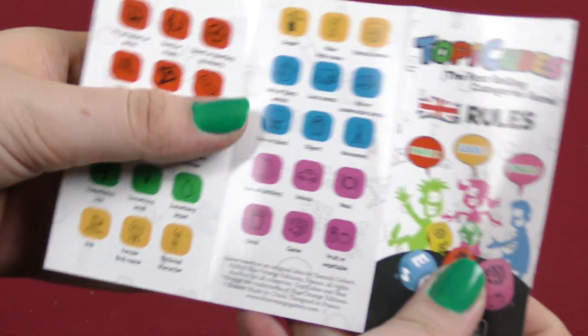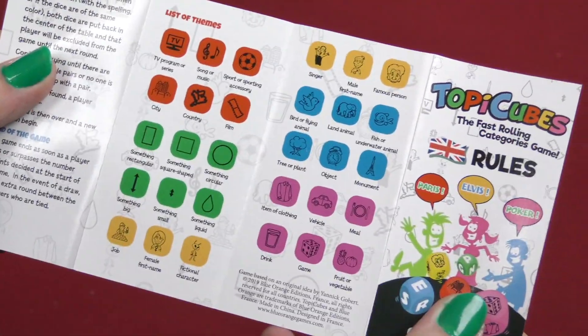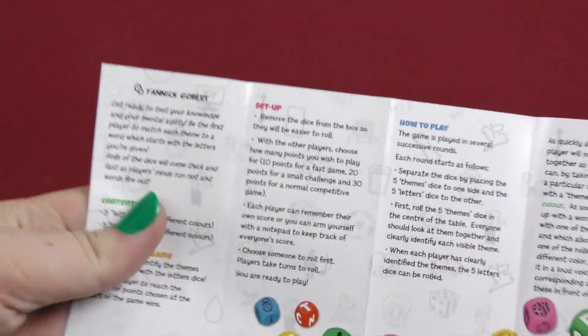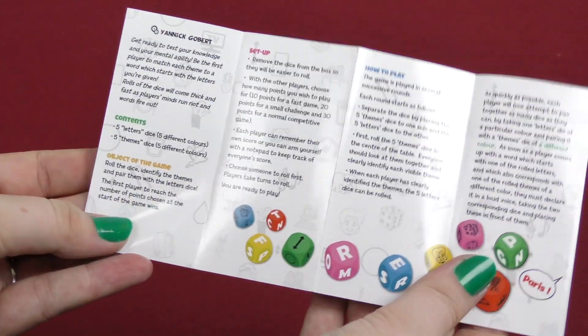Here you got it explaining all the different sides on the dice, your rules, and very simple. It looks like a very fast game.